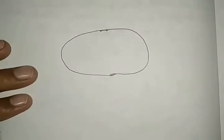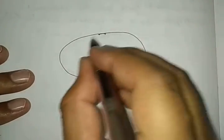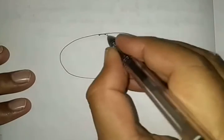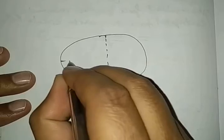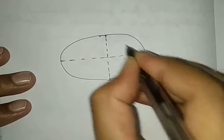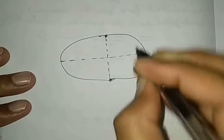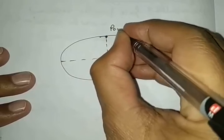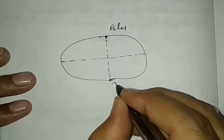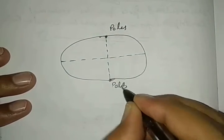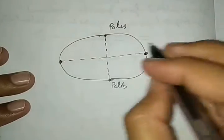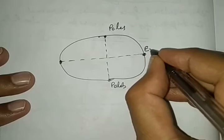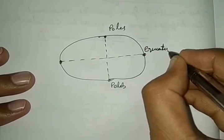This is the position of Earth. Here is the black color. See very carefully. These two points are called poles, and these two points are called equator.